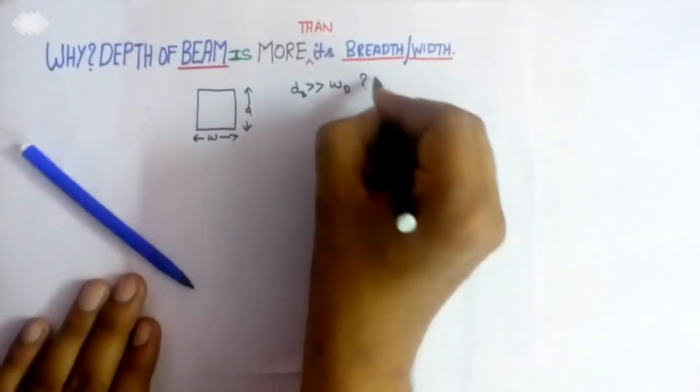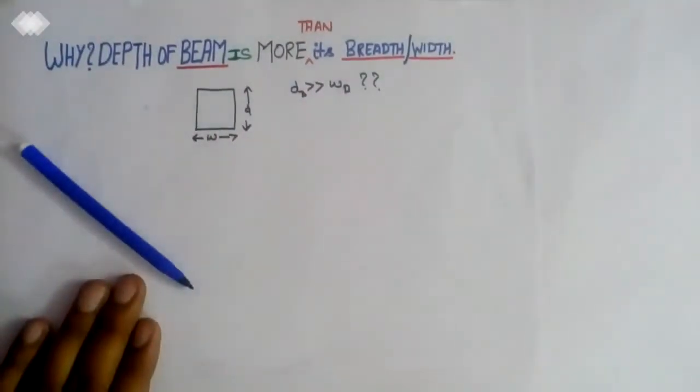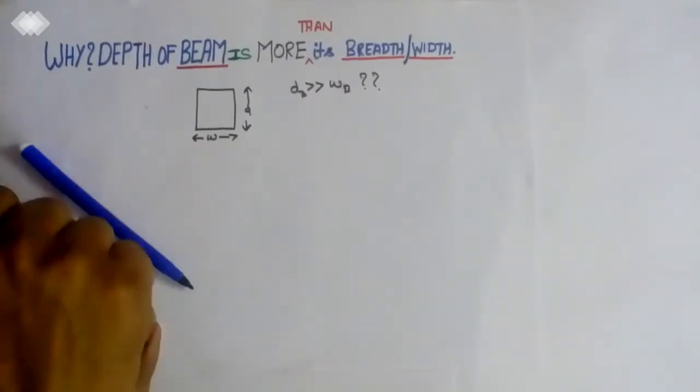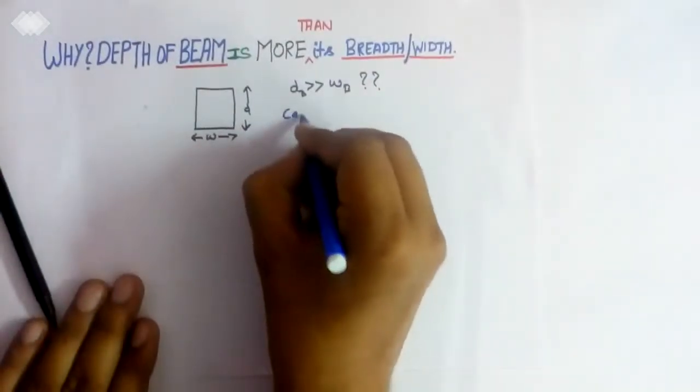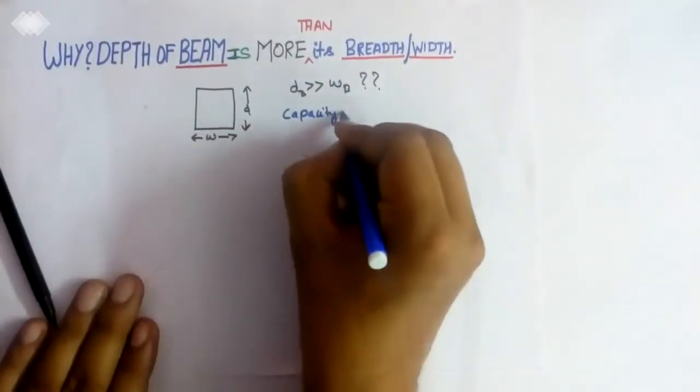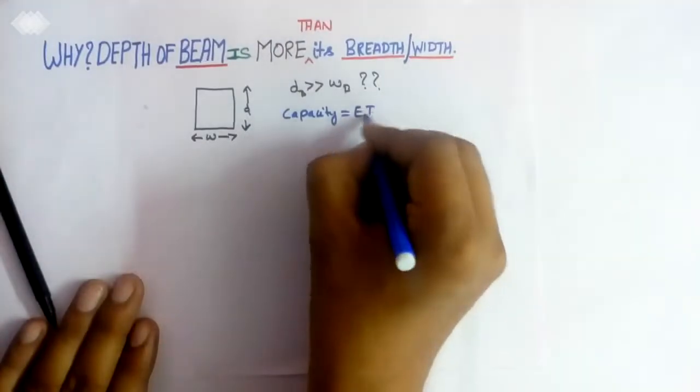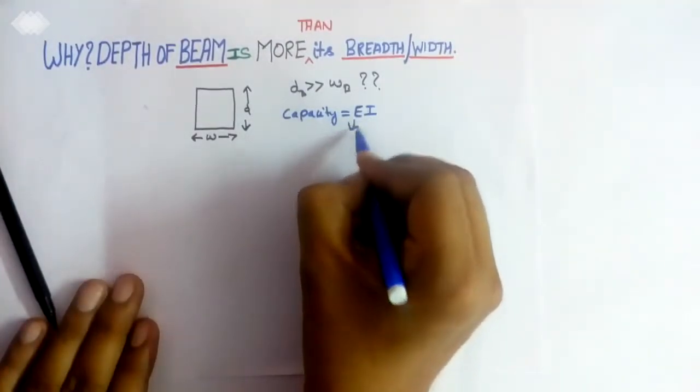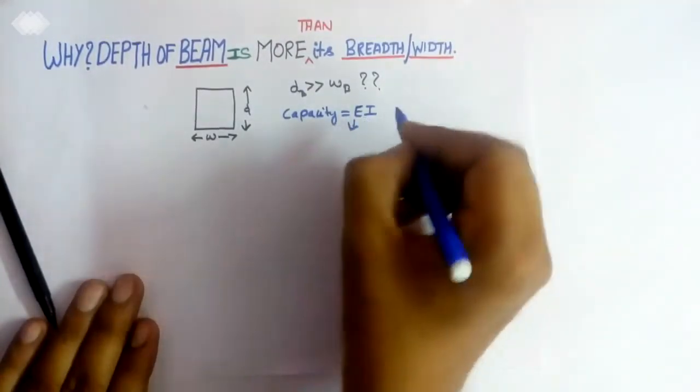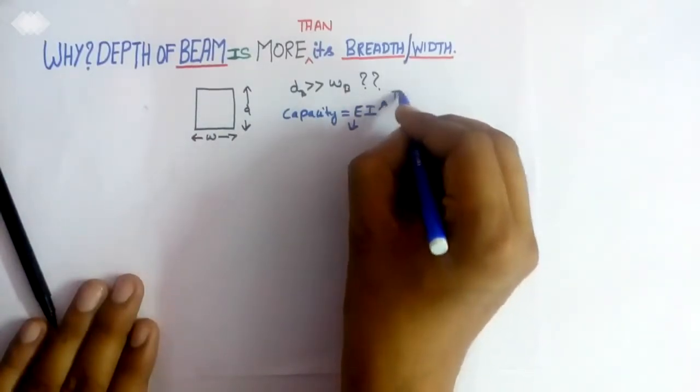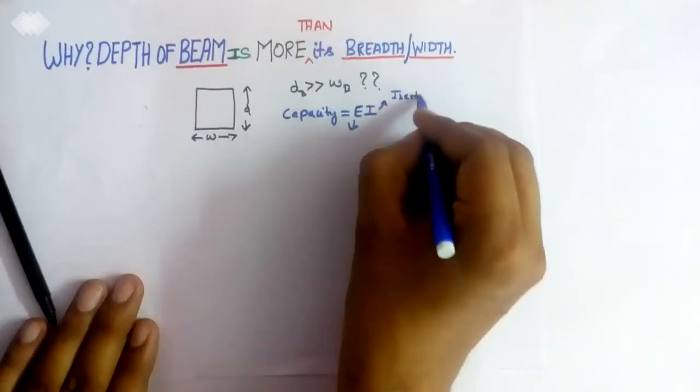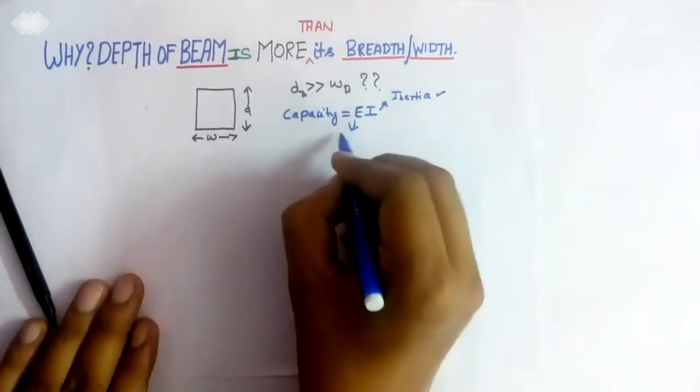First of all, I would like to introduce you to the concept of capacity, that is EI. This is the modulus of elasticity E and this is the moment of inertia I.